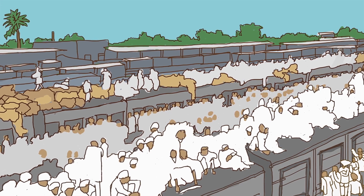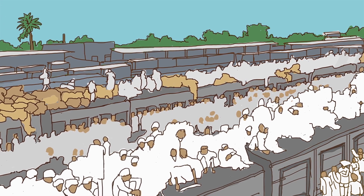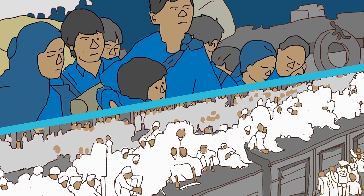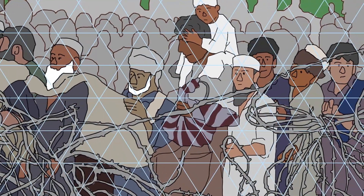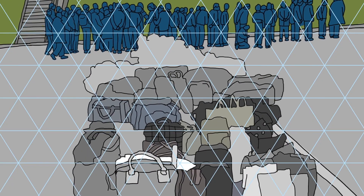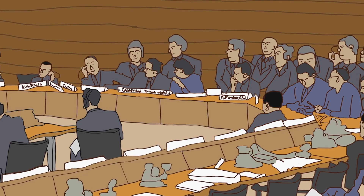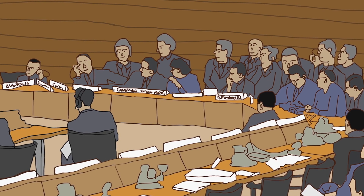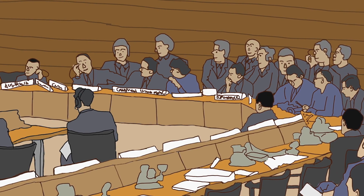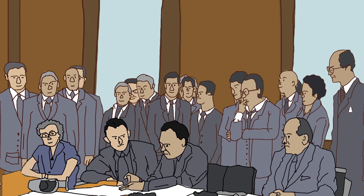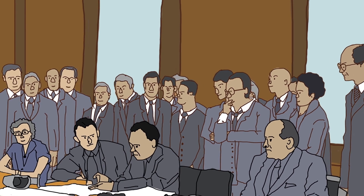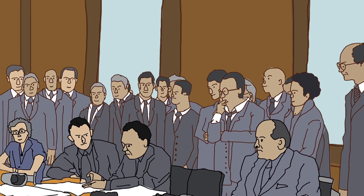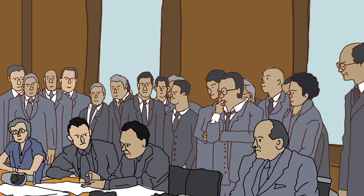Throughout history, millions of refugees have benefited from refugee rights and international support. Many owe their lives to the system of international protection. It was after World War II that countries from all over the world agreed to grant fundamental rights to refugees. These rights were established in the 1951 Convention relating to the status of refugees.